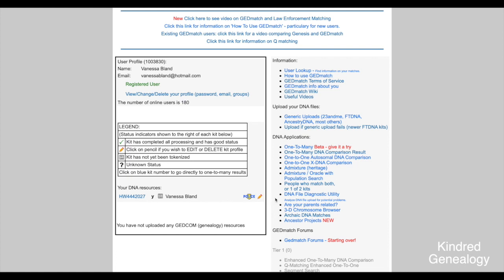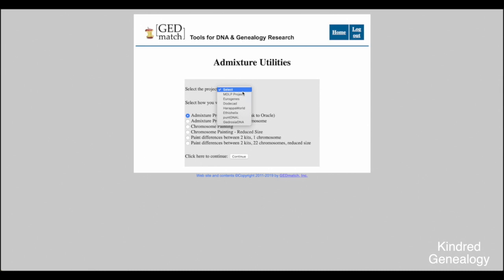Back on the home page, look at that right hand menu again and scroll to 'DNA Applications'. Underneath you'll see lots of tools — we're going to look at 'Admixture/Heritage'. For today just leave the processing at 'Admixture proportions with link to Oracle' and select a project. You'll see seven project options. These are quite academic — not as user-friendly as AncestryDNA — and are more focused on ancient DNA rather than the last few generations.